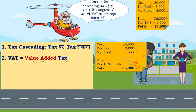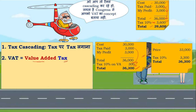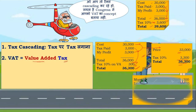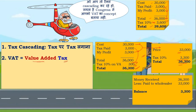In practical life, invoices are not made this way. In practice, the retailer shows: cost 30,000 plus profit/value addition 3,000 equals 33,000, then calculates 10% tax on 33,000. Total price becomes 36,300. But will the retailer pay 3,300 tax to the government? No — if the retailer pays 3,300, he gets no profit. The retailer charged 36,300, paid 33,000 to the wholesaler — the balance is 3,300.